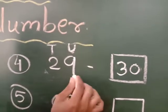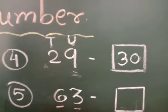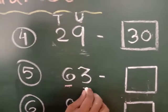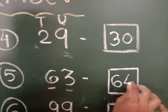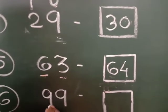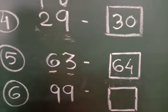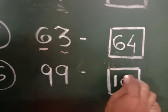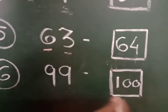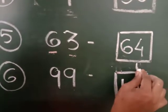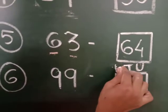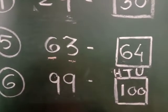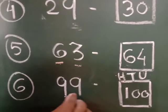Now see here — the next example is 63. Which number is this? 63. So after 63, number 64 will come. Now see here — here is number 99. And after 99, which number will come? Yes — 100. But students, here is a 3-digit number. So this is units place, this is tens place, and this is hundreds place. So all the digits change here because 99 is there.